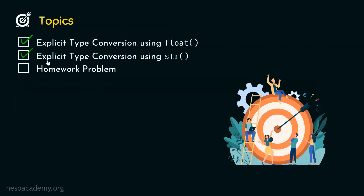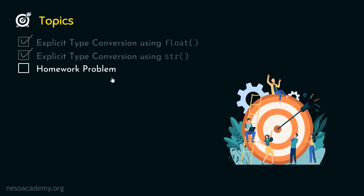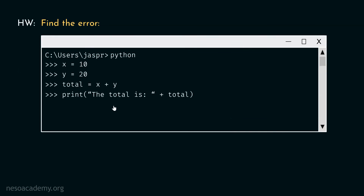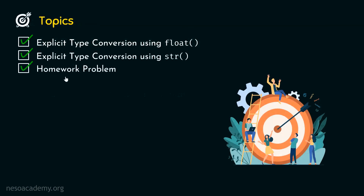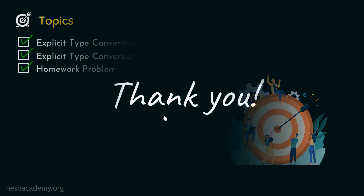We have understood explicit type conversion using float and explicit type conversion using str. Now let's look at the homework problem. We have already seen this problem — there is an error that produces a TypeError. Your job is to identify the cause of the error and rectify it, then post your answers in the comment section. That's it for now. Thank you for watching this presentation. I will see you in the next one.